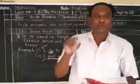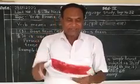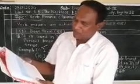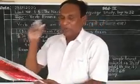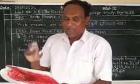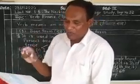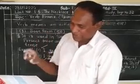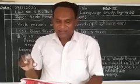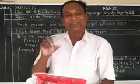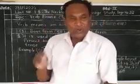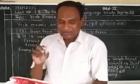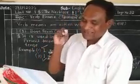Students, open page number 32, Activity number 7 — read the table of verb forms given below. There are five kinds of verb forms: base, S form, past tense, present participle, and past participle. This table is given in your textbook. Today I taught you only two forms — base and S form.